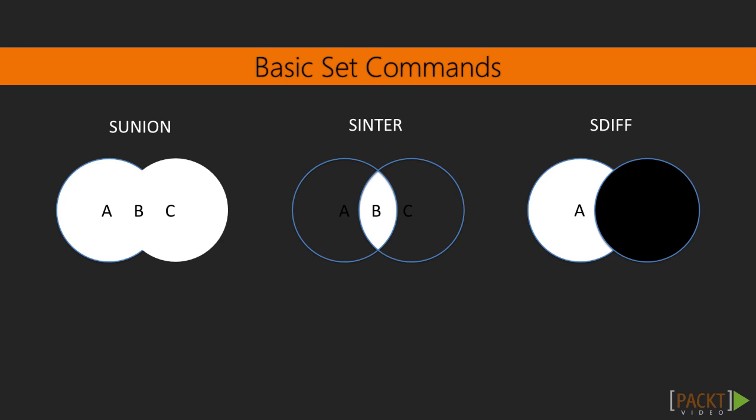For even more, you can efficiently perform set arithmetic between two or more sets. You might remember from studying set theory that there are three basic ways of combining sets: there's union, intersection, and difference. These correspond to the sunion, sinter, and sdiff Redis commands.